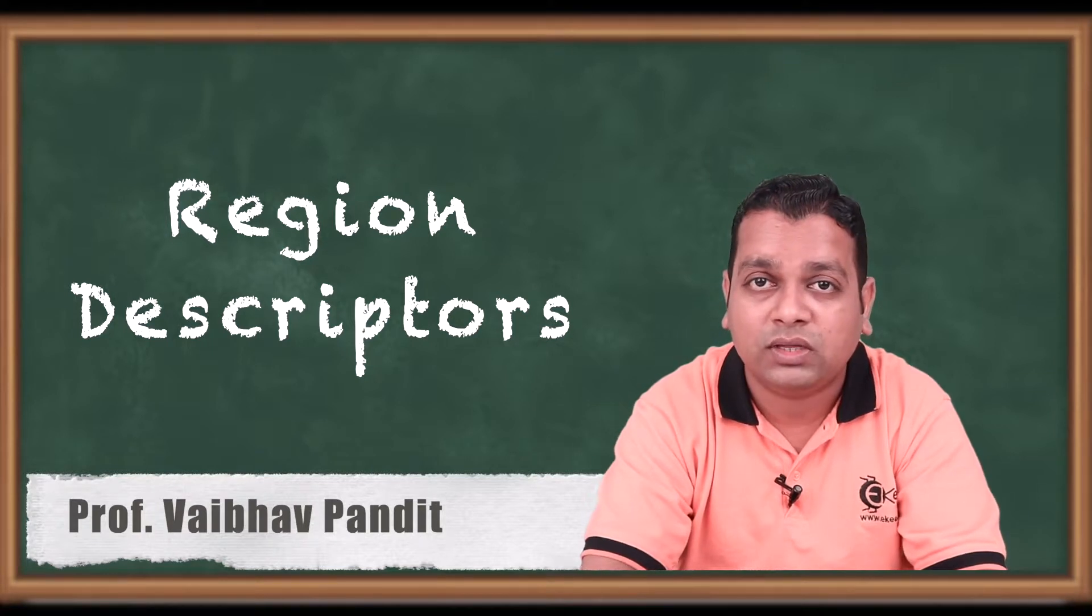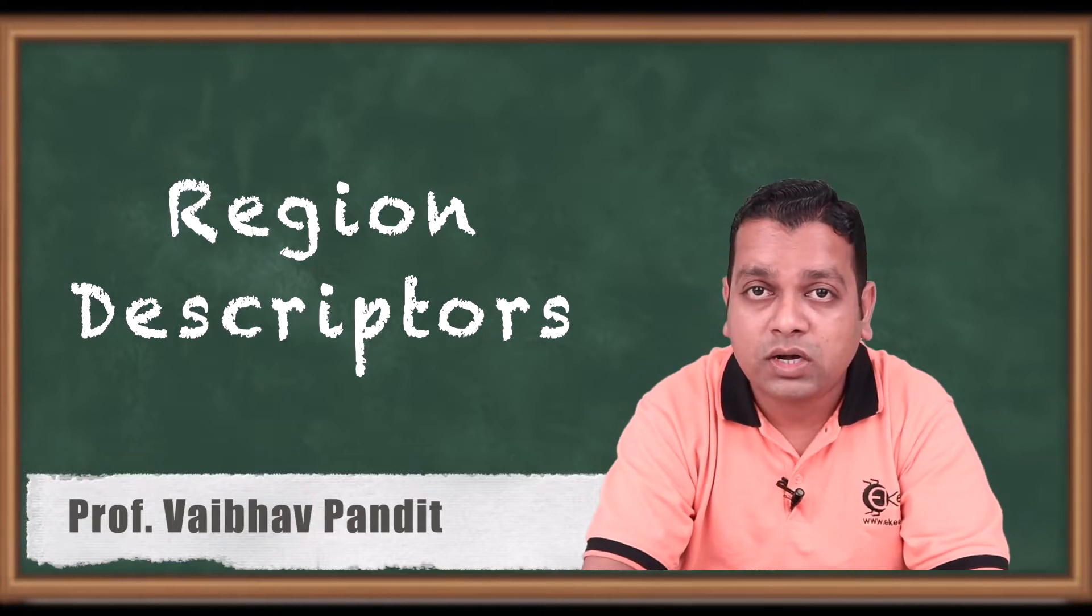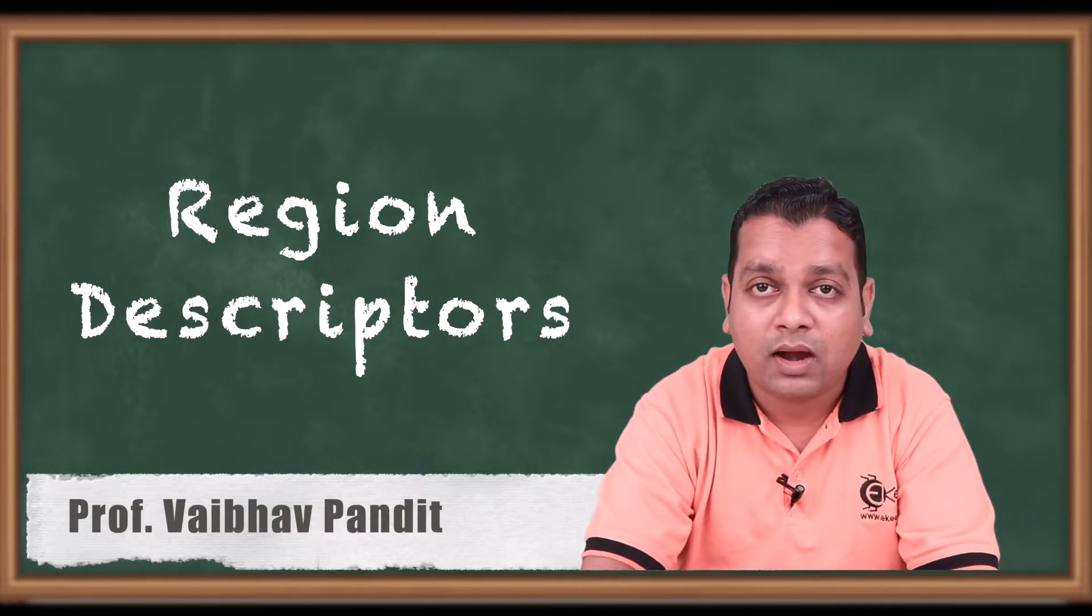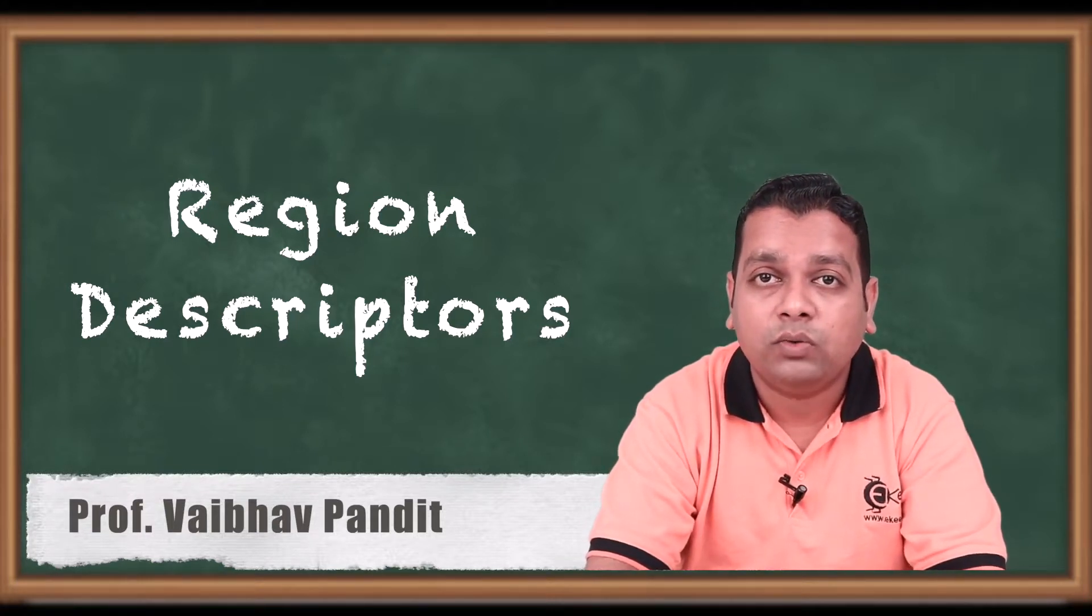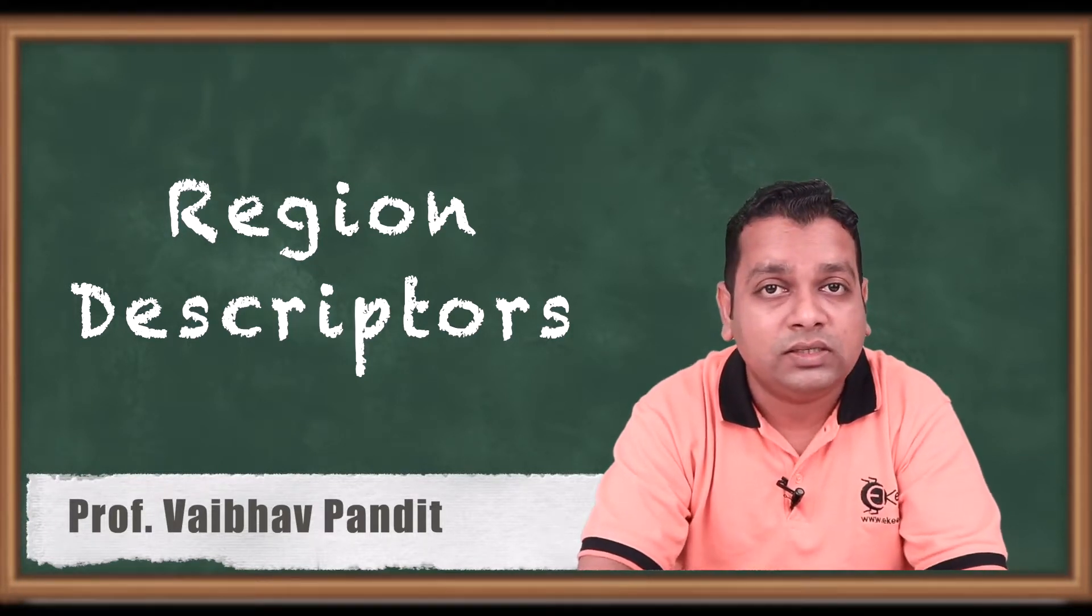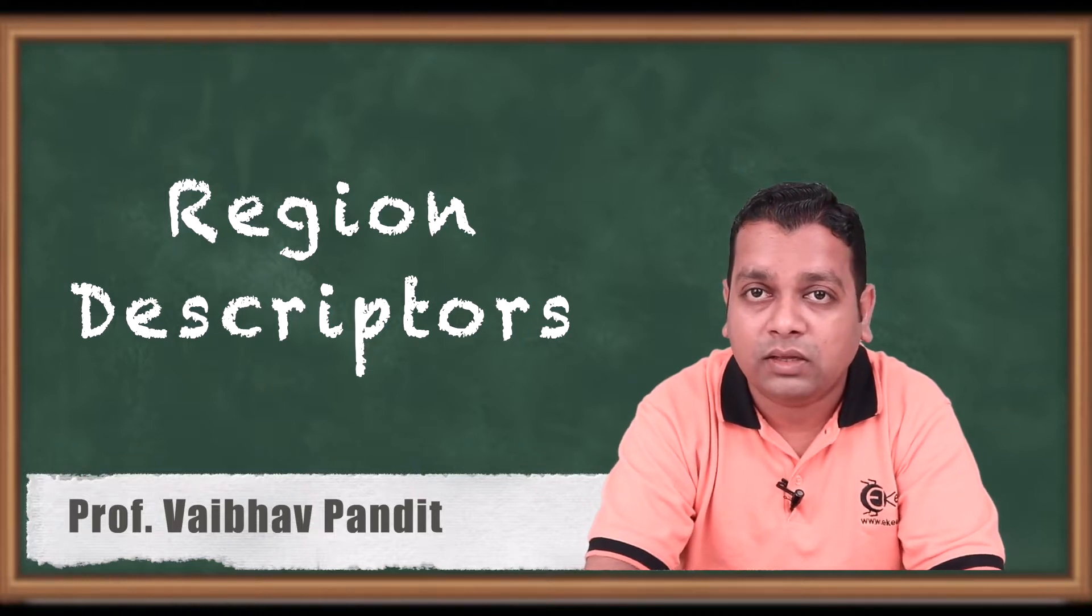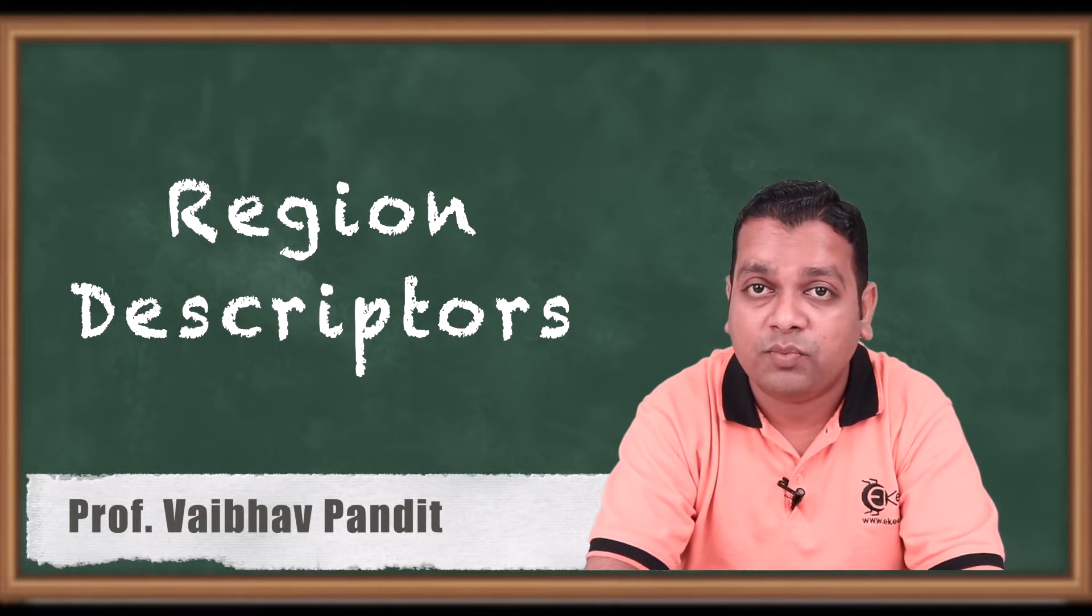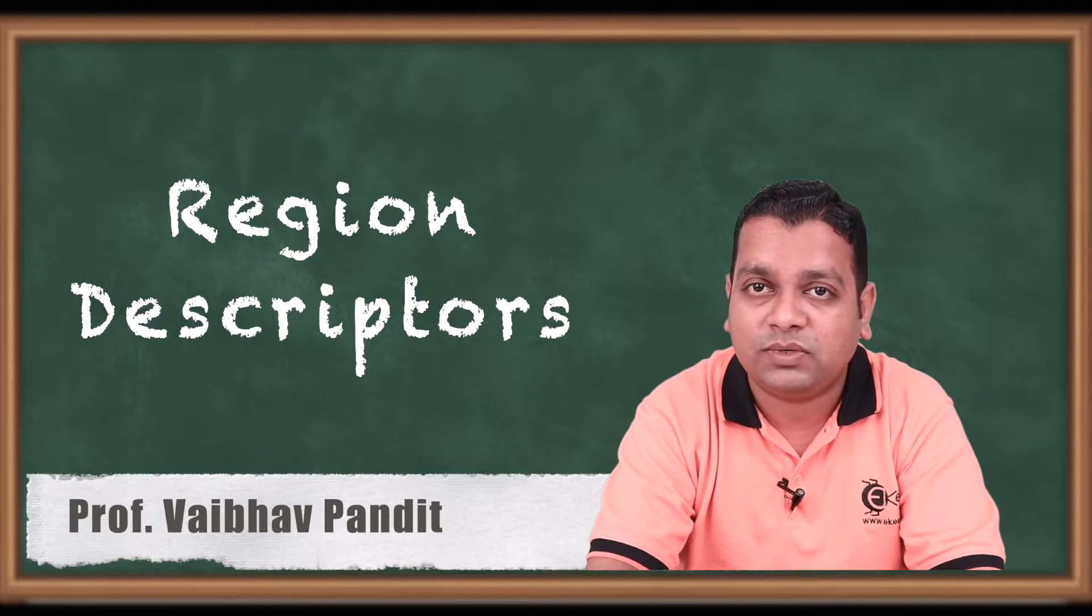We covered the boundary following algorithm, representation using chain codes, boundary approximations using minimum perimeter polygons, addressing merging and splitting techniques, signatures, and skeletons. For descriptions, we started with shape numbers, Fourier descriptors, and in the previous video, statistical moments. Let us see the details of region descriptors in this video.